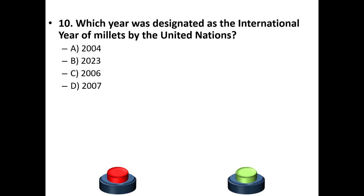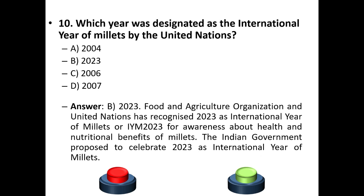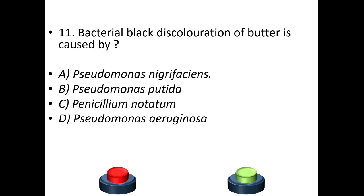Tenth question: which year was designated as the International Year of Millets by the United Nations? 2004, 2023, 2006, or 2007? Your answer is 2023. The Food and Agriculture Organization and the United Nations recognized 2023 as IYM — International Year of Millets.